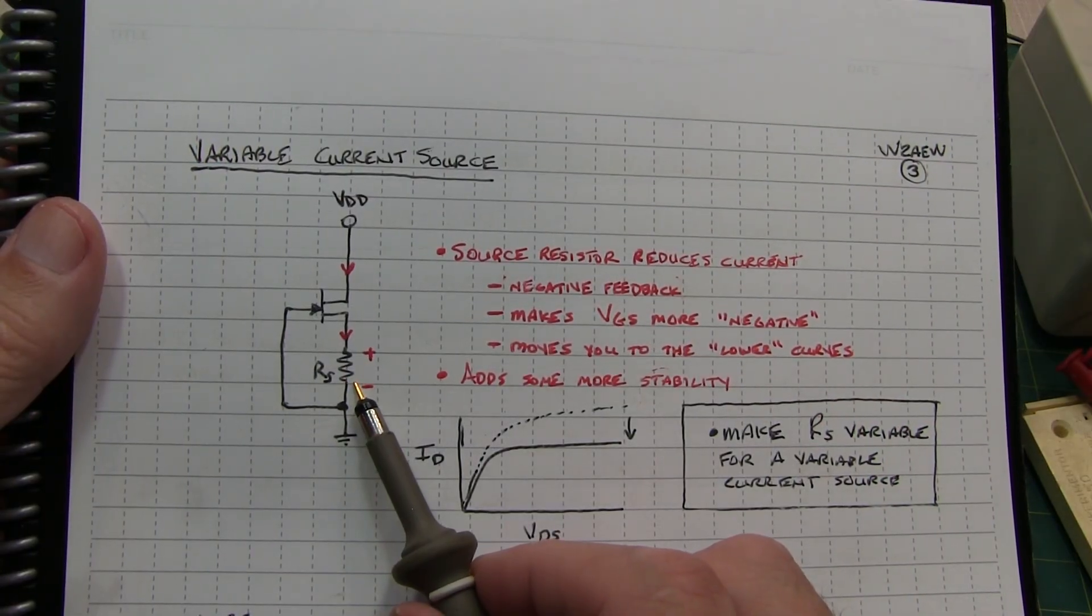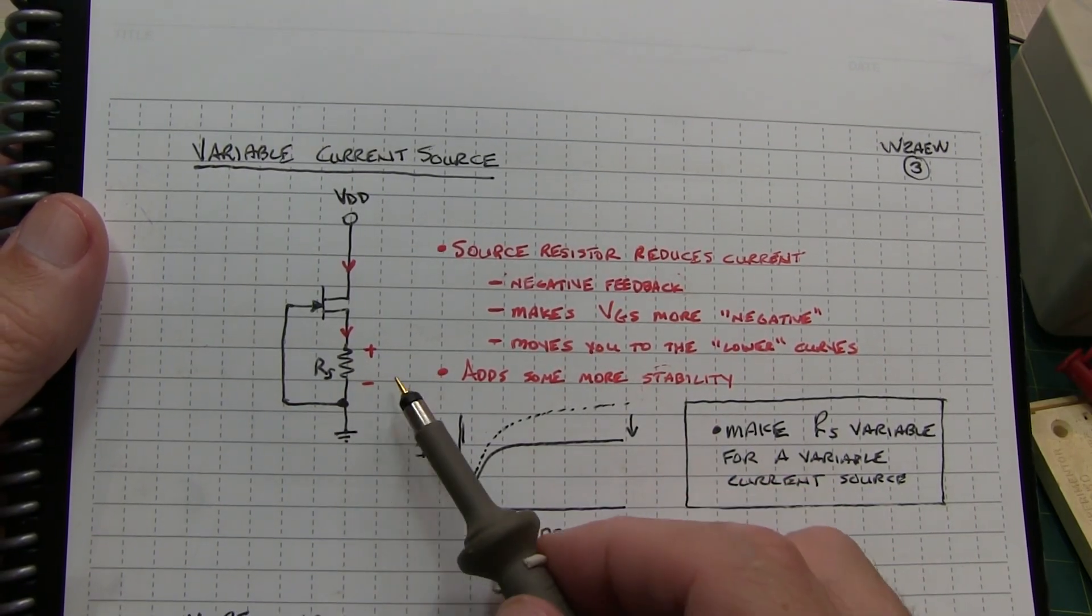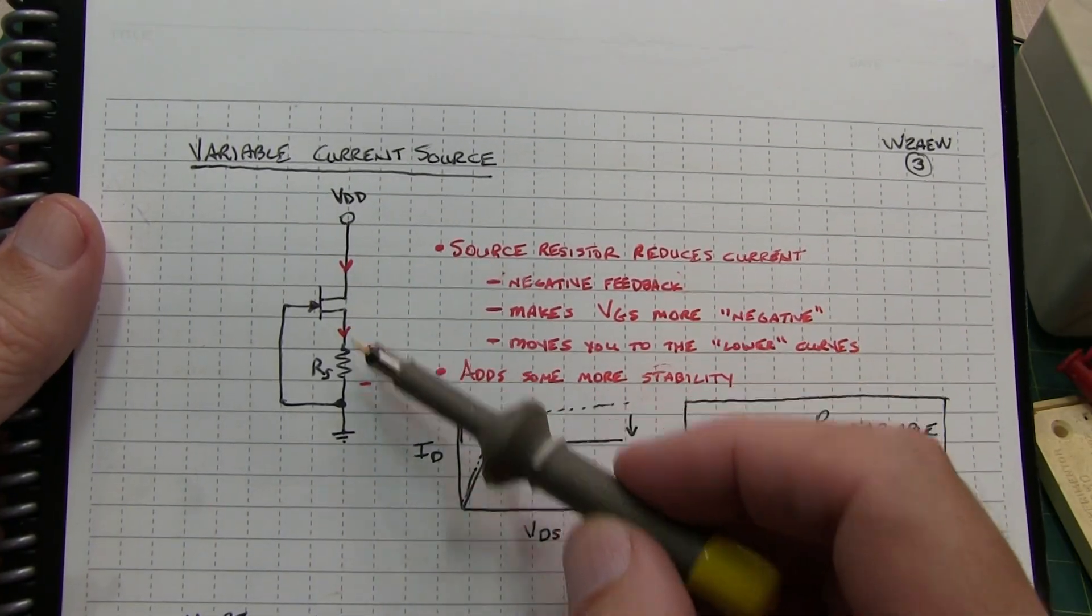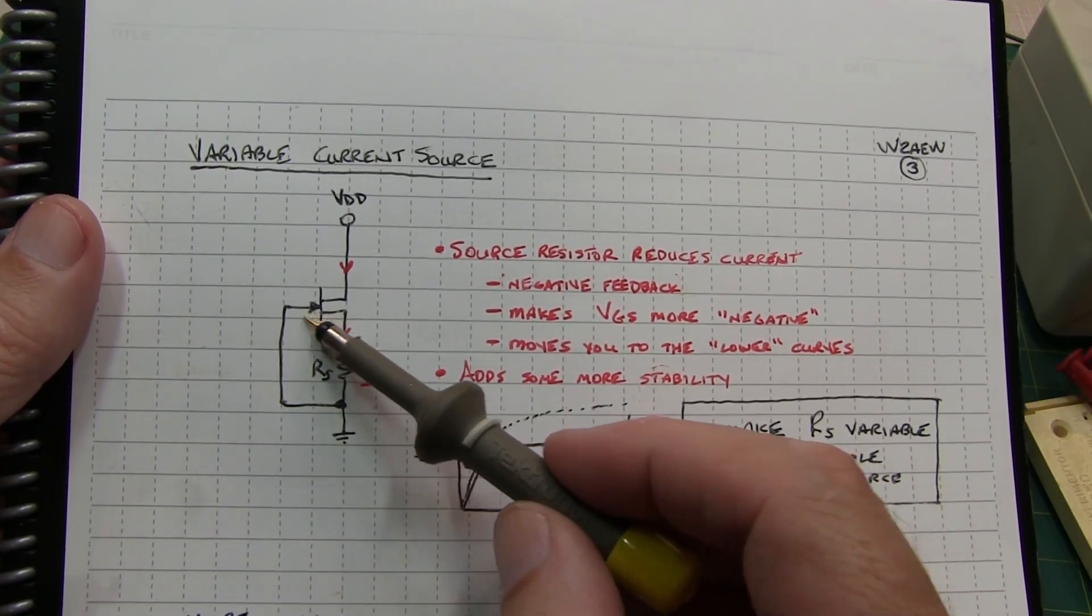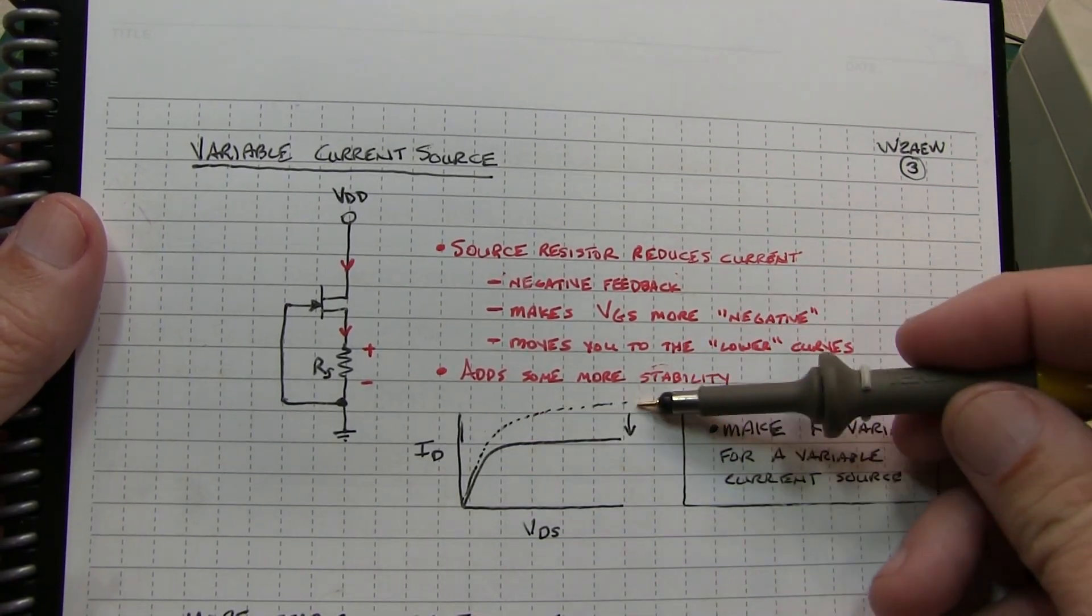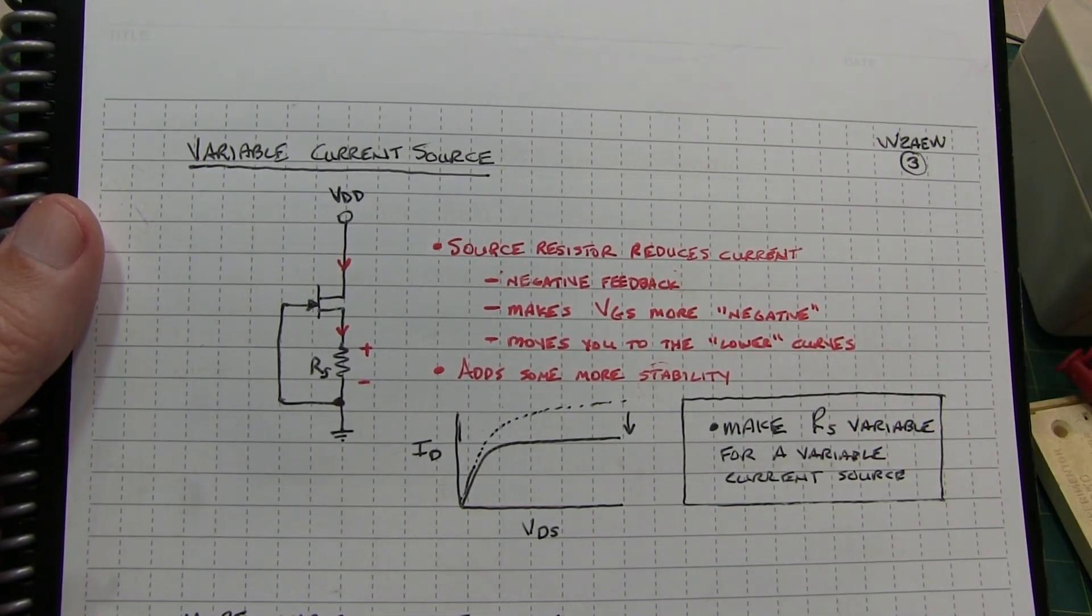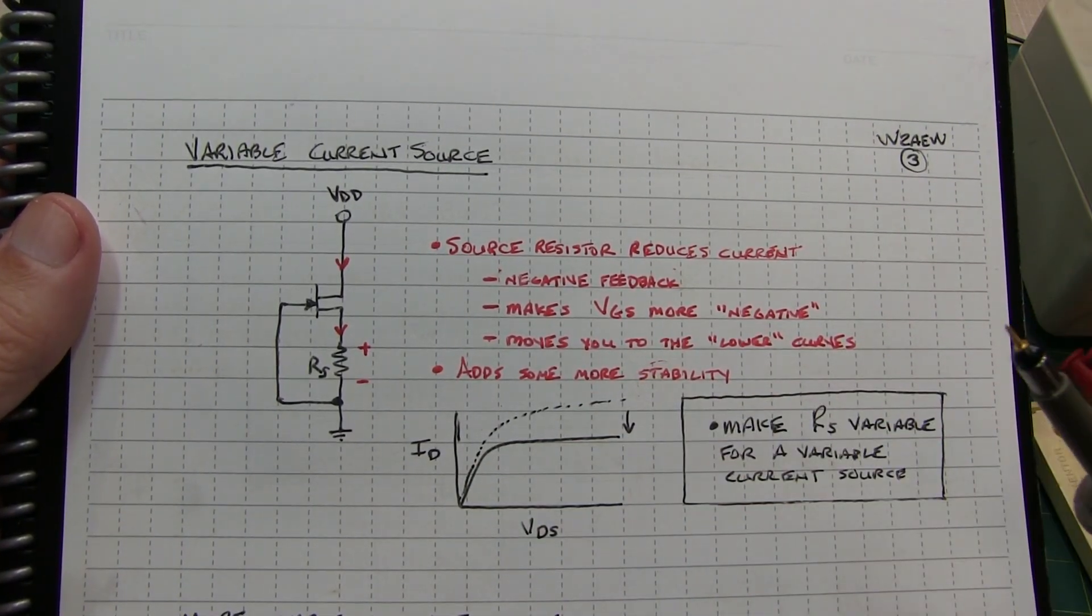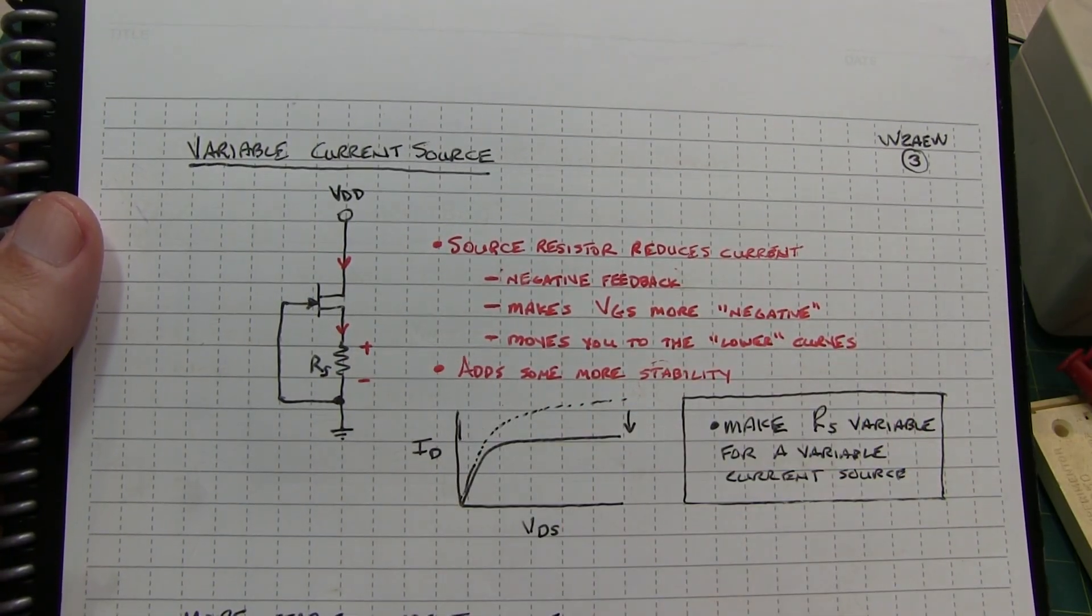Now by adding one resistor, we can actually vary the current that we get in this JFET current source. This resistor essentially adds a little bit of negative feedback, because as we bring up VDD and the current starts increasing, we're generating a voltage drop across this resistor, which tends to make VGS more negative. So it tends to bring us down from our IDSS curve down to the next lower step. That negative feedback tends to reduce the current, makes it a little bit more stable. And also by making this a variable resistor, we can now create a current source that is variable.